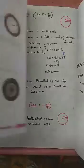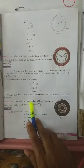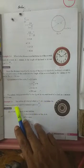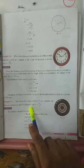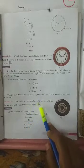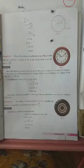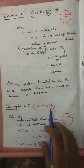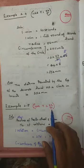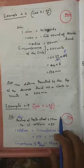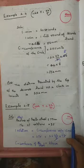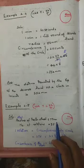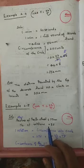Example 2.5: The radius of a tractor wheel is 77 cm. Calculate the distance covered by it in 35 rotations. Take pi = 22/7. Solution Step 1: Pi = 22/7. The radius of the tractor wheel is 77 cm.